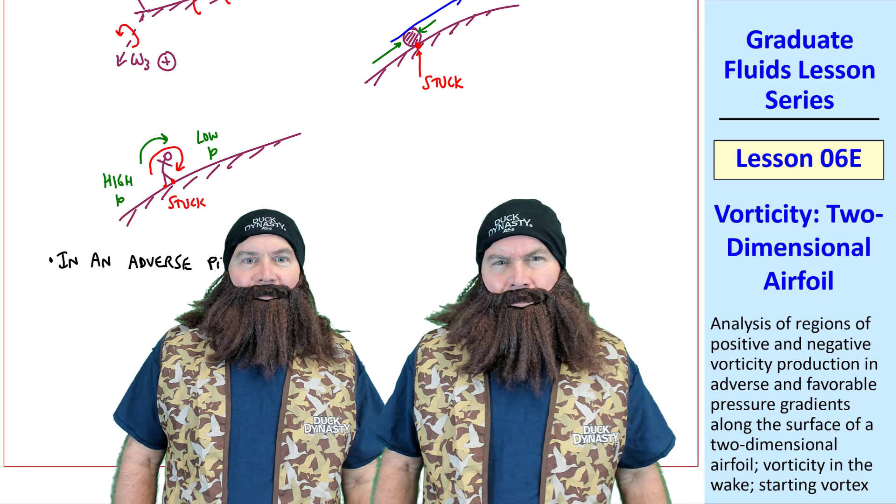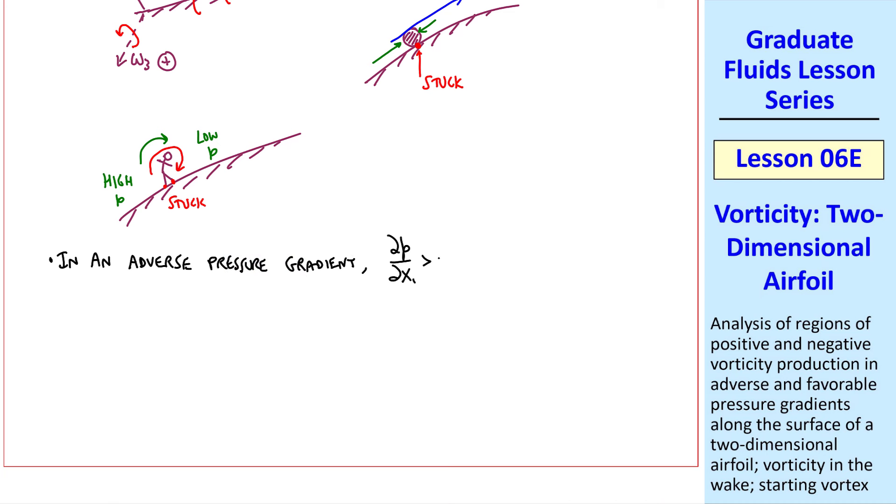In an adverse pressure gradient, ∂P/∂X1 is positive. In other words, pressure is increasing downstream in the X1 direction. Thus, we have the opposite effect, where our little person stuck to the wall has a low pressure on the left and a higher pressure on the right, and the flow is decelerating, opposite to this case. Again, since his feet are stuck to the wall, the pressure gradient tends to push him backwards, so he turns counterclockwise, which in my analogy is a positive vorticity.